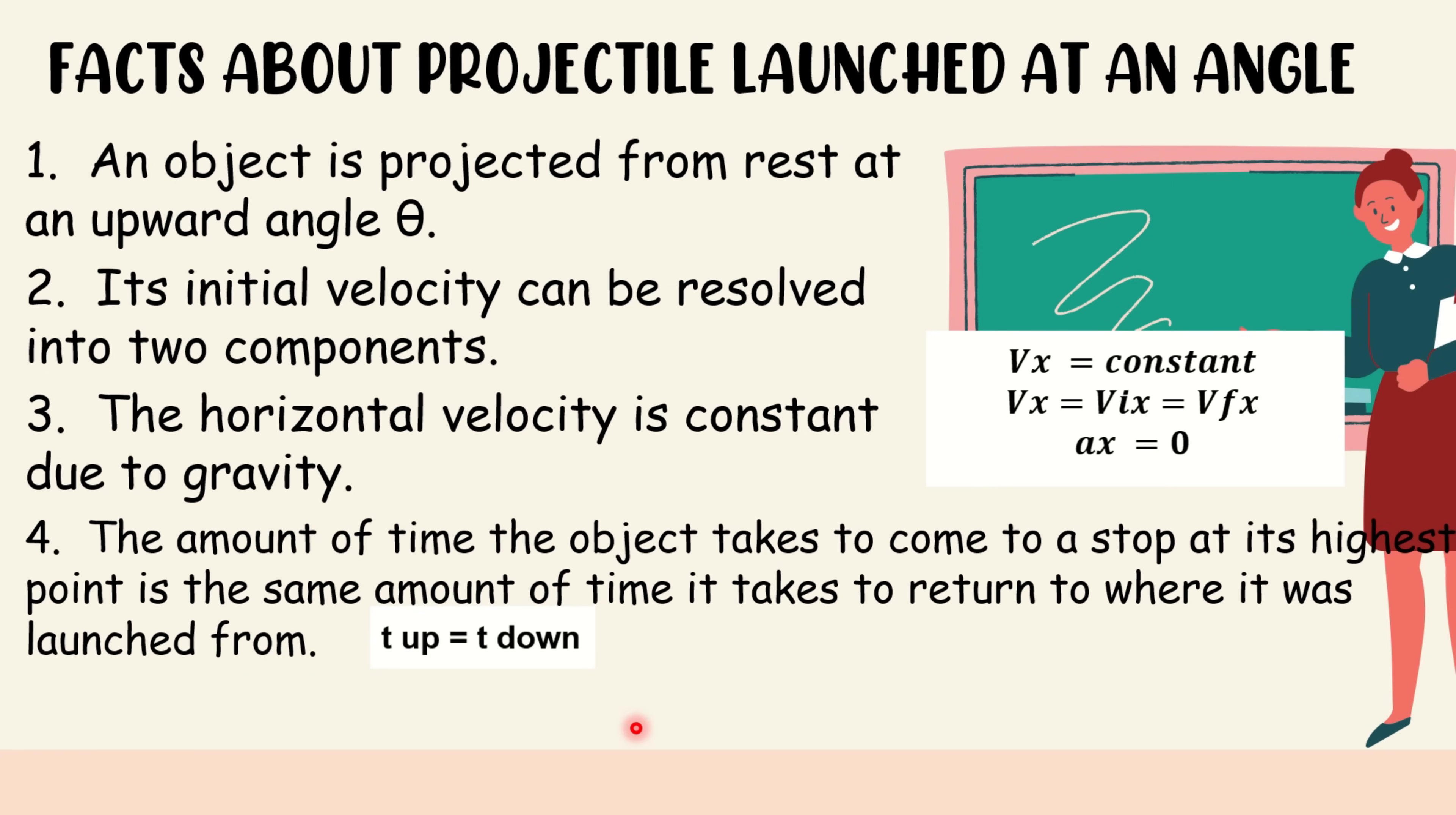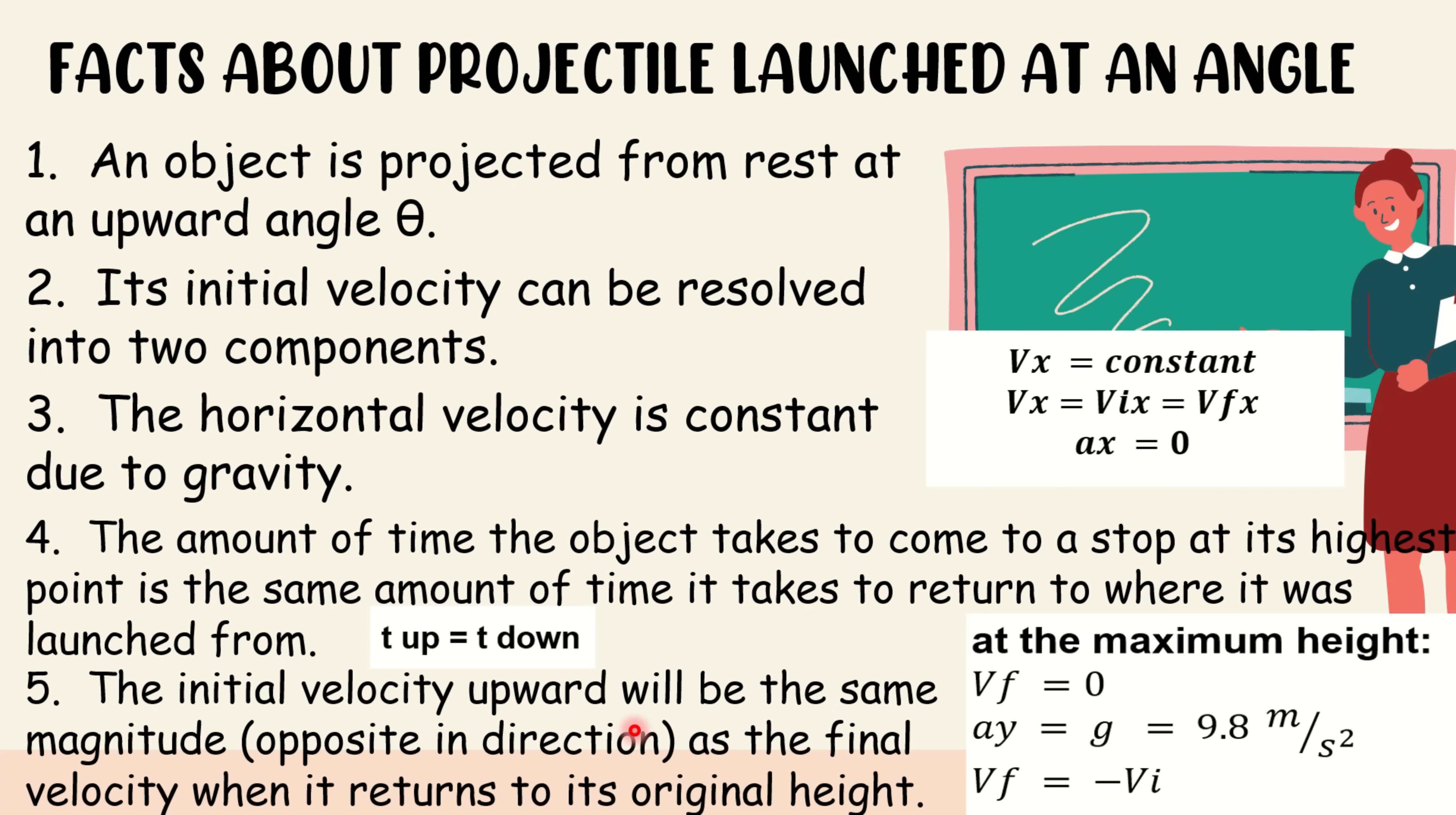Fourth, the amount of time the object takes to come to a stop at its highest point is the same amount of time it takes to return to where it was launched from. And lastly, the initial velocity upward will be the same magnitude as the final velocity when it returns to its original height. So, these are the facts about projectile launch at an angle.